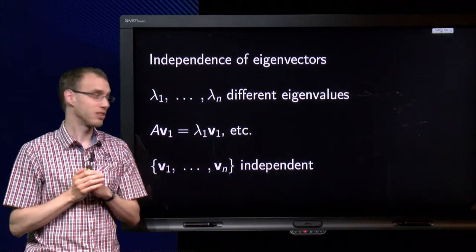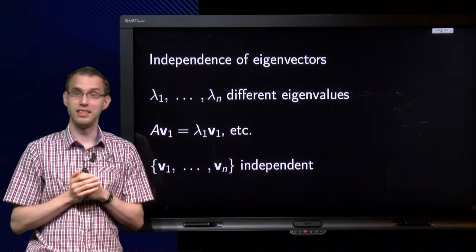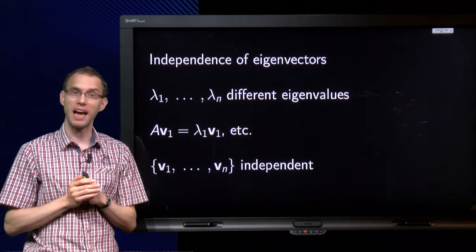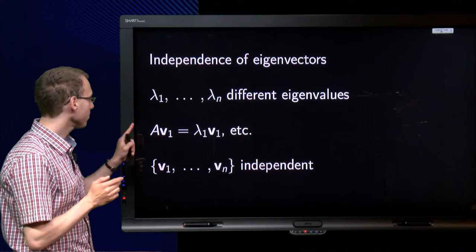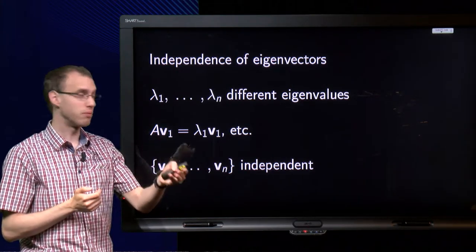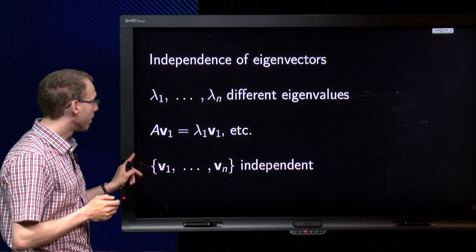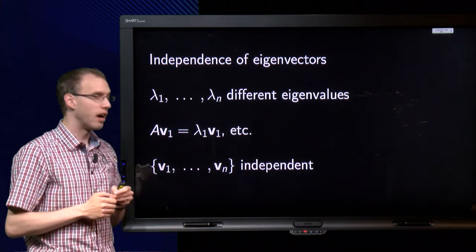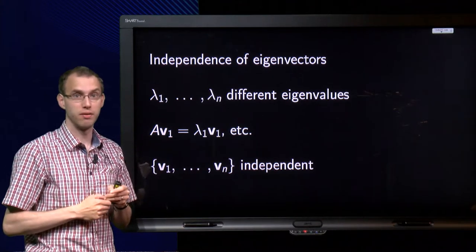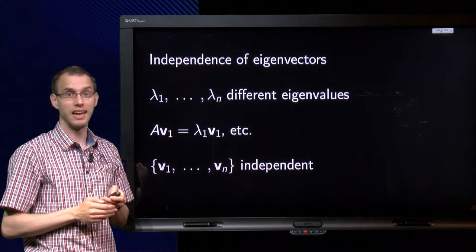Independent eigenvectors. Let us have n different eigenvalues, lambda 1 to lambda n, where A times v1 equals lambda 1 times v1, and so on. Then we have to show that the set of v1 to vn is independent.